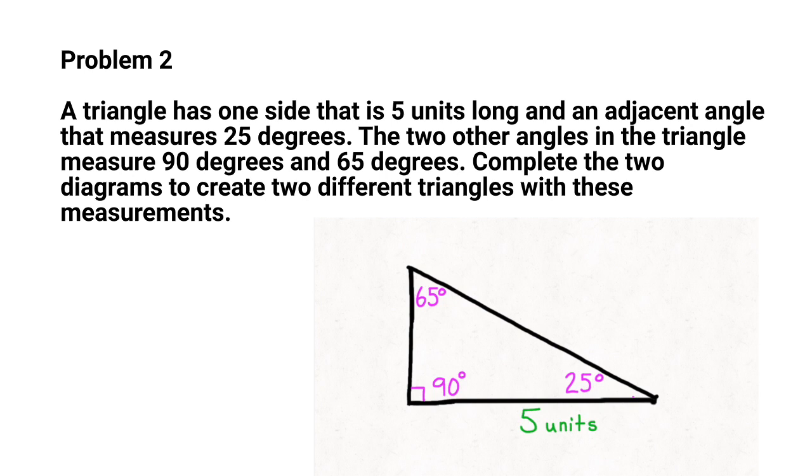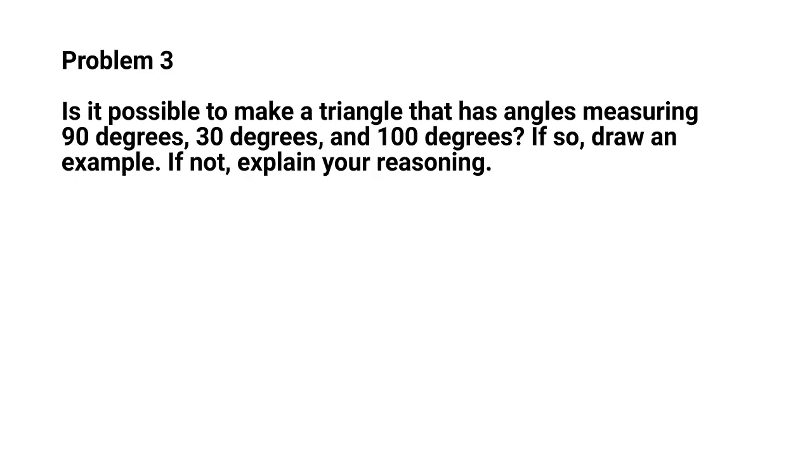Problem number three: is it possible to make a triangle that has angles measuring 90 degrees, 30 degrees, and 100 degrees? If so, draw an example. If not, explain your reasoning.